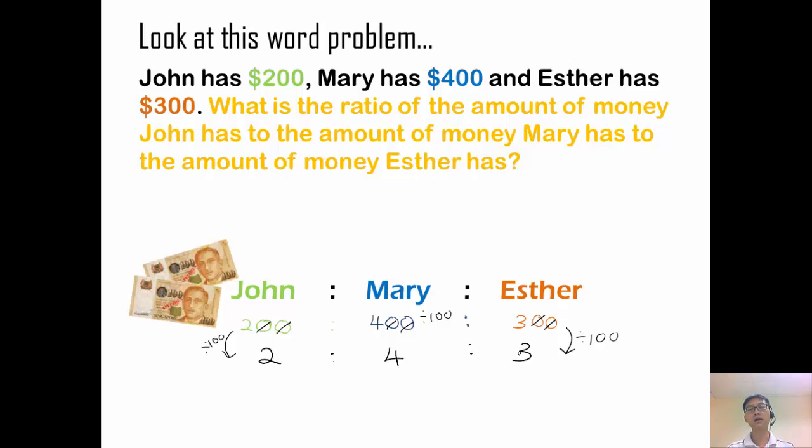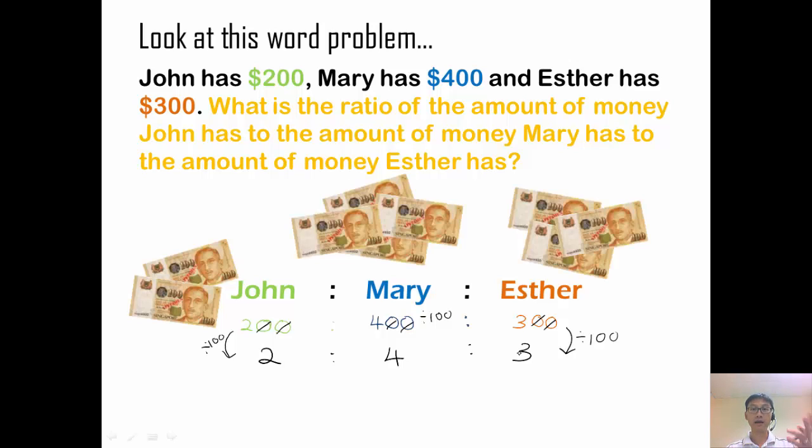So three quantity is just basically adding one more quantity, but the concept, everything still remains the same. If I can group the money together, John has two $100 notes, Mary has four $100 notes, and Esther has three $100 notes. So what I'm doing, that's what I'm doing when I'm simplifying, I'm grouping them together.